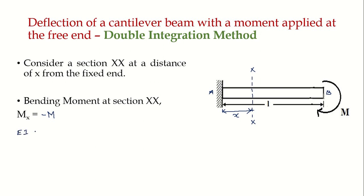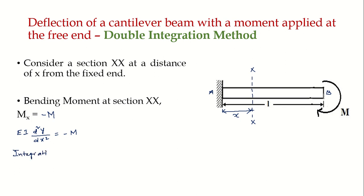We write the bending moment equation as EI (d²y/dx²) = -M. In the double integration method, we integrate the bending equation once to get the slope, then integrate again to get deflection. Integrating with respect to x, since x is the variable, gives: EI (dy/dx) = -Mx + C1, where C1 is the constant of integration.